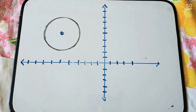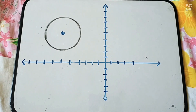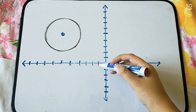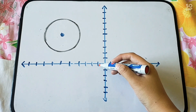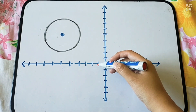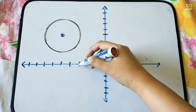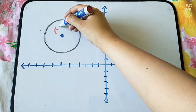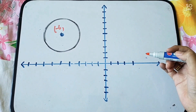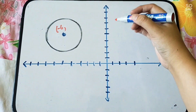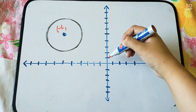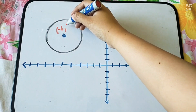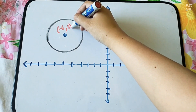Let's have another example. Given the circle, let's find the center. Counting the x-coordinate: 1, 2, 3, 4, 5, 6 — since it's to the left, it is negative. So x equals negative 6. For y, counting upward: 1, 2, 3, 4, 5. So the center is (negative 6, positive 5).